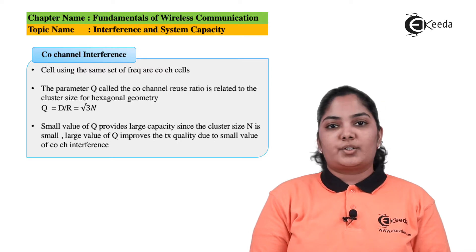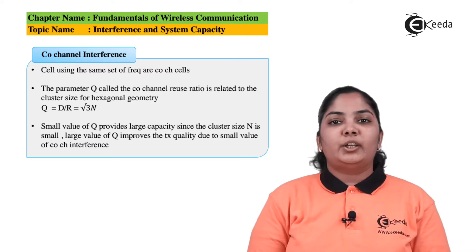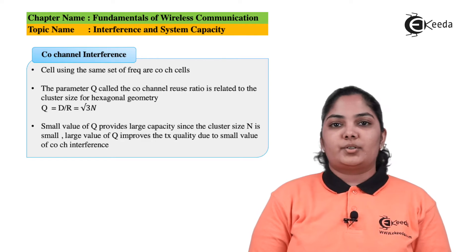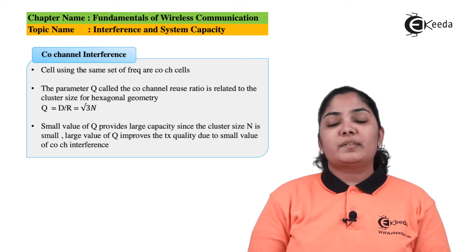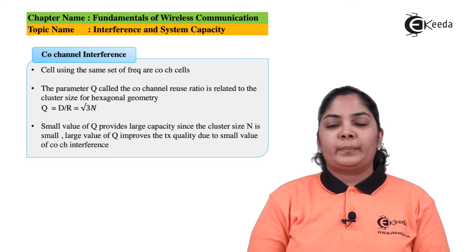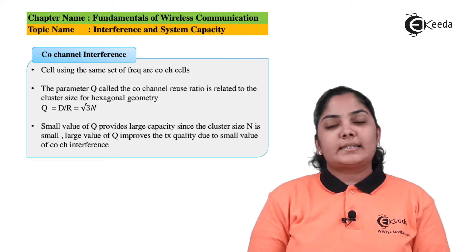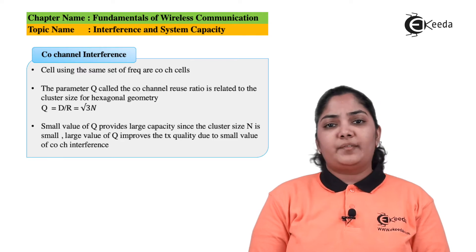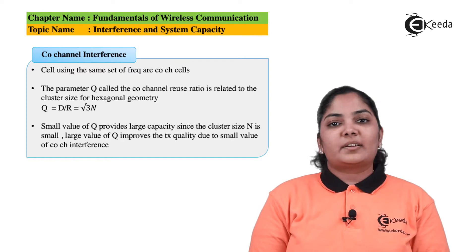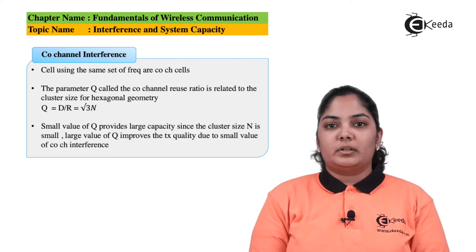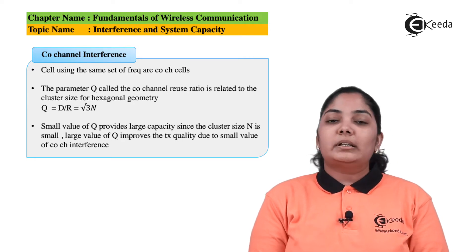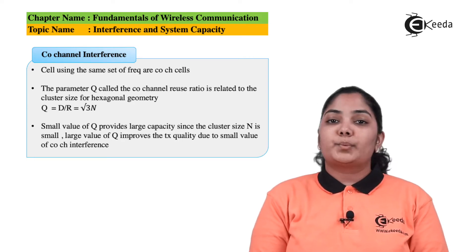On the other hand, if Q is very large, the number of cells in a cluster is also very large, hence co-channel cells in two clusters will be very far apart. Because the cells are far apart, co-channel interference is minimized, meaning the transmission and reception quality of a phone in a cell is very good.